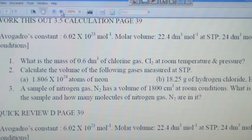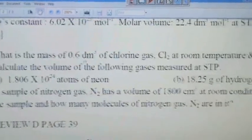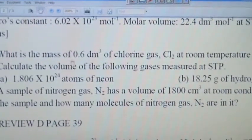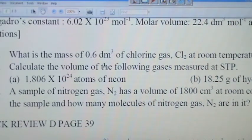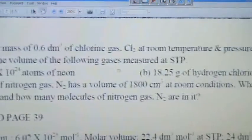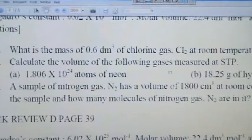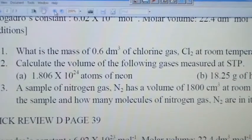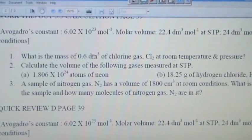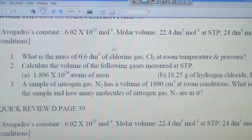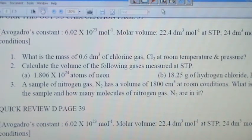Let us look at the question deeper and we want to focus on what is written there. Number 1, what is the mass of 0.6 dm³ of chlorine gas at room temperature and pressure?